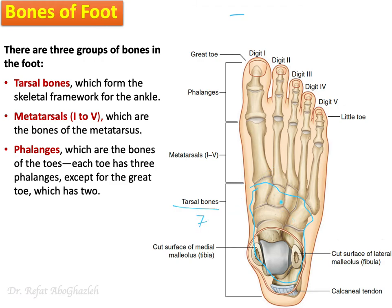After the tarsal bones come the metatarsals. Before jumping to them, remember that carpal bones in the hand are eight, but here we call them tarsal bones — and there are seven. The metatarsal bones are five.